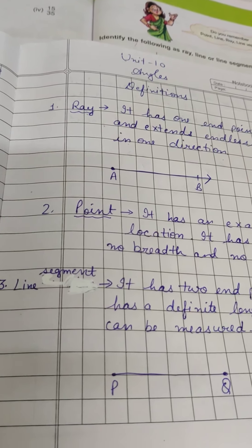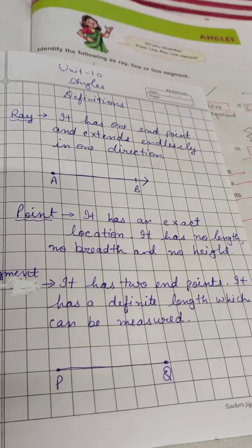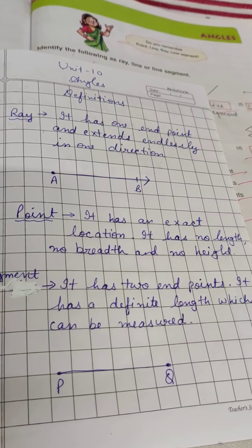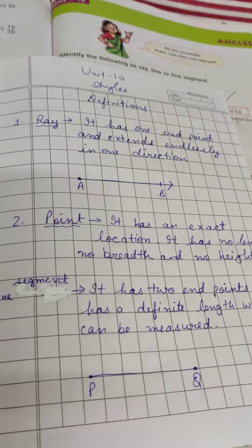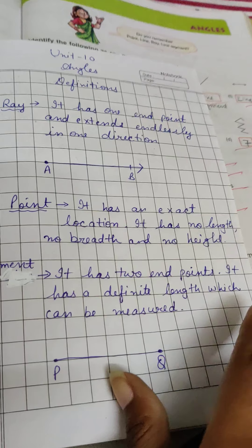Next is line segment. It has two end points. We can measure the length. We know the start and end. Clear? So it has two end points and it has a definite length. This means it has a fixed length.